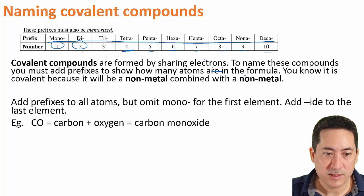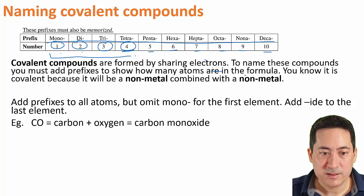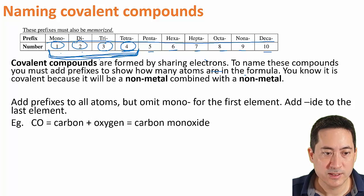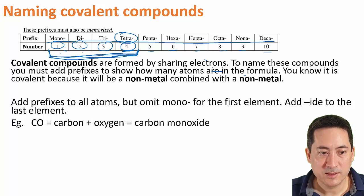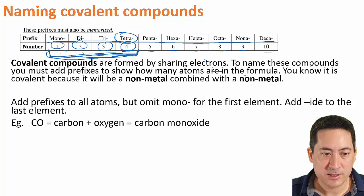So mono, di, tri, tetra are the different ones. The rest start to be the same. Pentane, hexane, heptane, octane, nonane, decane. So just the first four are different for naming ionic compounds compared to the stems for organic chemistry. So mono, di, tri, tetra, a little bit more logical. Tricycle, dies two, tetris, mono one, a little bit more logical as far as the English common English words are concerned with one, two, three, four.